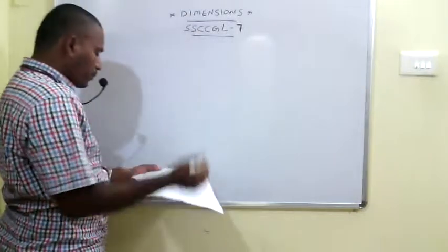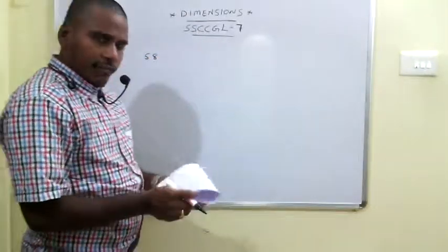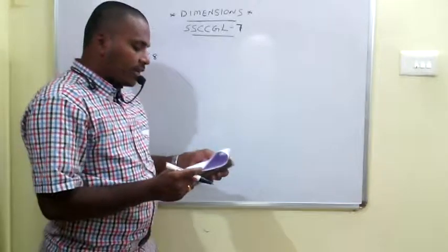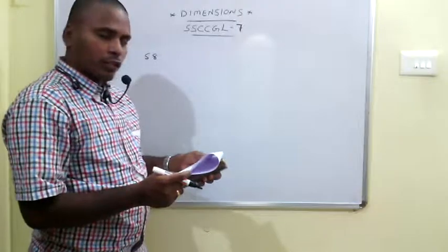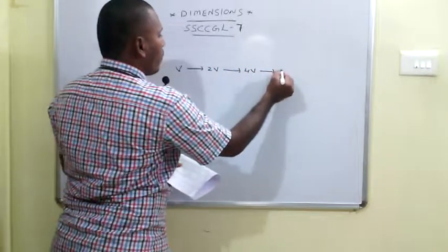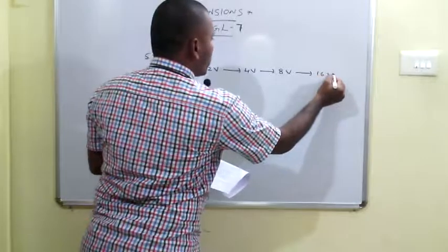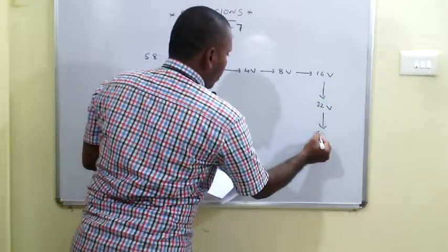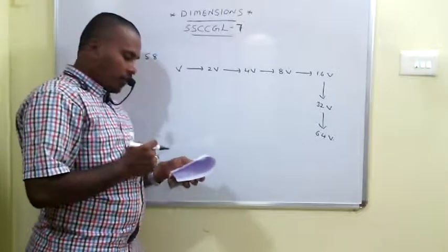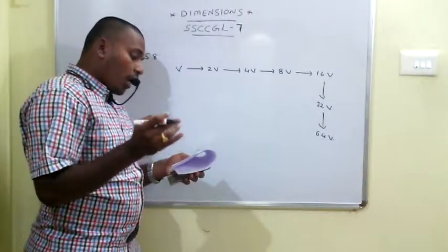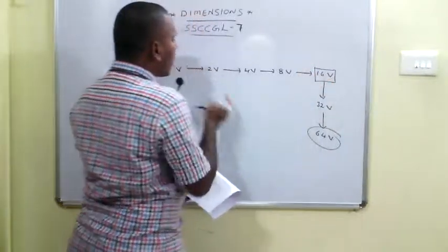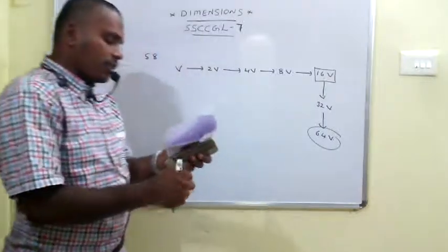The 58th problem: Water fills a container such that its volume doubles every 5 minutes. It takes 30 minutes for the container to be full. Starting with volume V: after 5 min = 2V, 10 min = 4V, 15 min = 8V, 20 min = 16V, 25 min = 32V, 30 min = 64V. One fourth of 64V is 16V, which is reached at 20 minutes. The answer is 20 minutes.